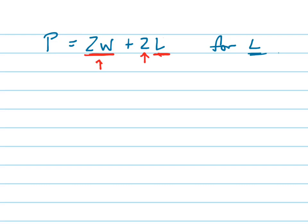The first thing I should get rid of is the 2W because it is being added to it. So I don't want to get rid of this 2 next to the L first because it would just complicate the problem if I tried to do that. So I'm going to subtract 2W from both sides. And there's my new equation.